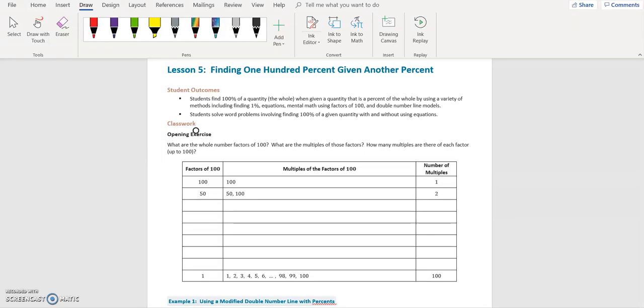Hi, this is Ms. Pellegrin, and today we're going to be looking at Module 4, Lesson 5, Finding 100% Given Another Percent, Student Outcomes.